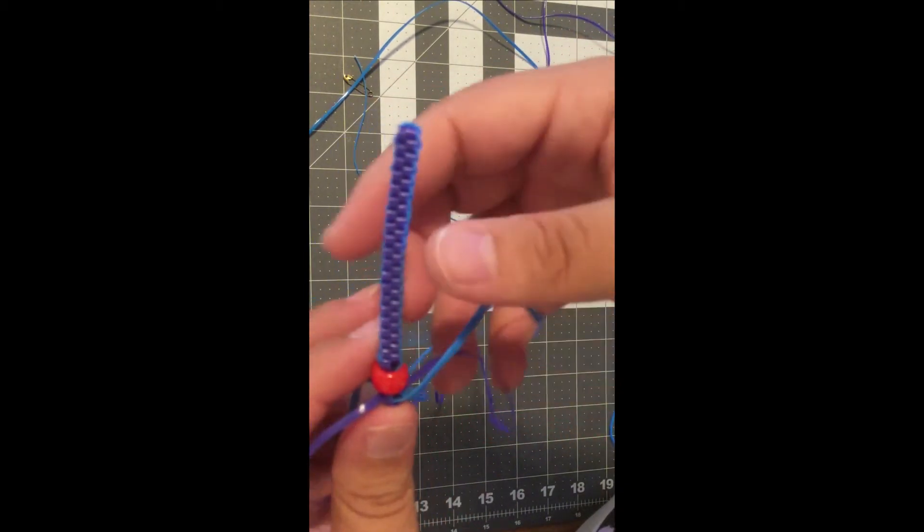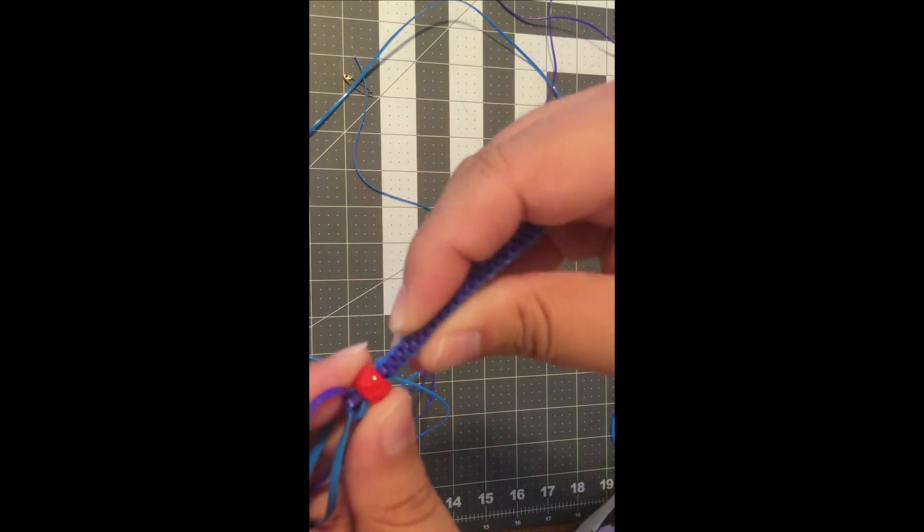When you're making your box, make sure that your bead is on there straight before you tighten it or your lanyard will come out crooked.